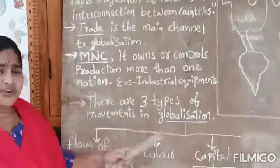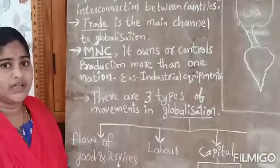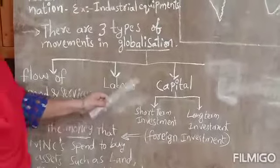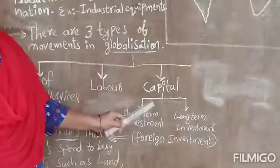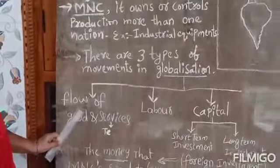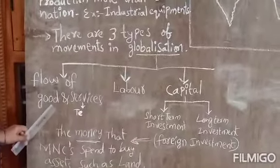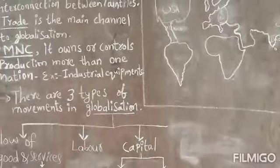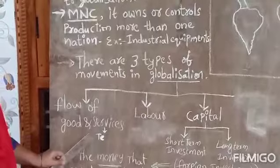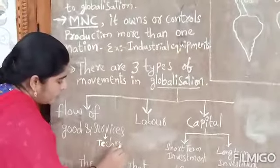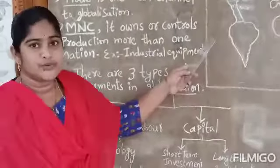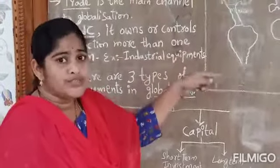There are three types of movements in globalization. Number one is flow of goods and services. Number two is flow of labor. Number three is flow of capital. In the globalization, produced goods move all over the world. When goods are being produced, services are also automatically produced. With the help of technology, services are also produced and flow across the world.